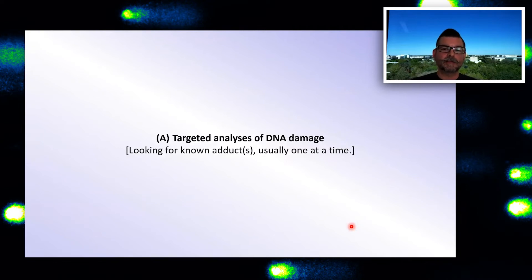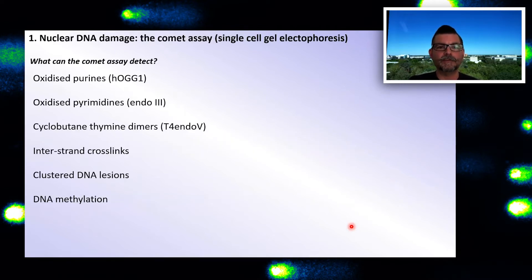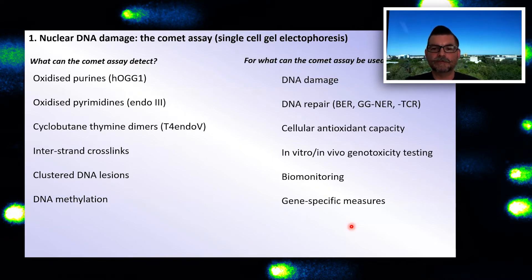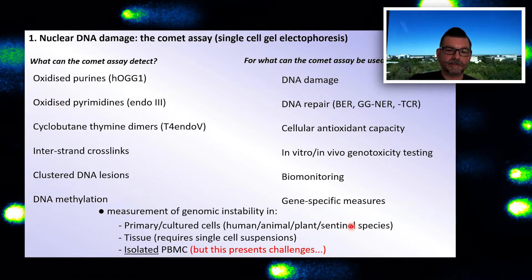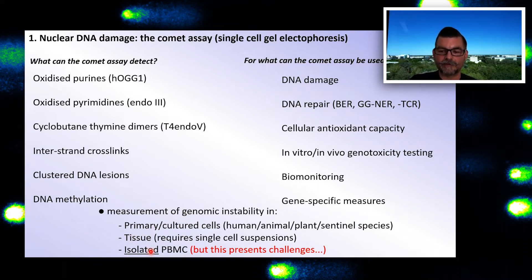Talking a bit more about targeted analysis of DNA damage — these look for known adducts, usually one at a time, such as the comet assay. The comet assay can detect genomic instability in primary cells, cultured cells, tissues, or isolated PBMCs. This was one of our earliest forays into the comet assay world, because blood and isolation of PBMCs presents significant challenges.